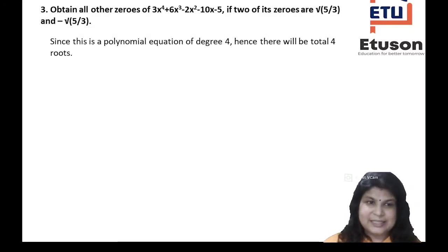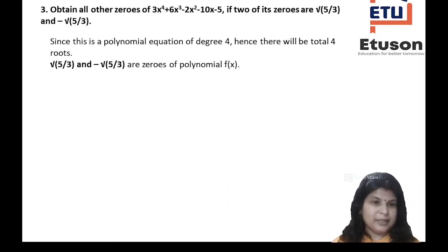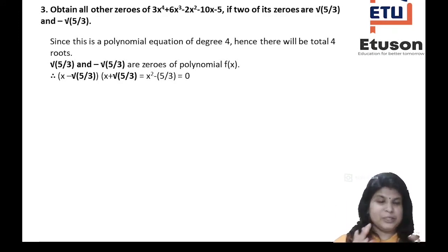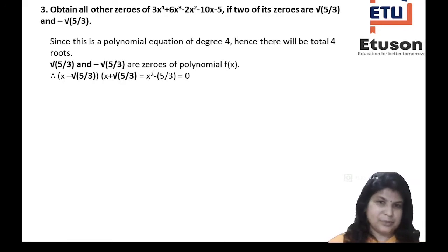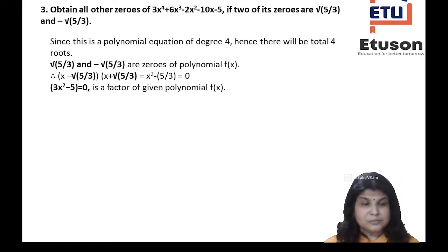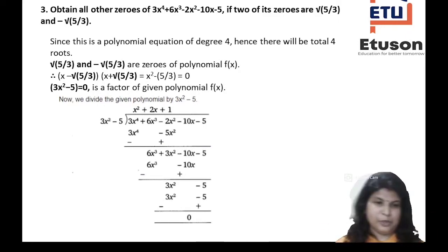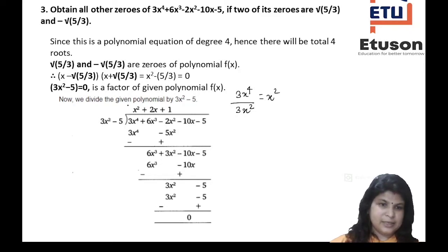Since the polynomial is of degree 4, there will be 4 roots total. The product (x - √(5/3))(x + √(5/3)) = x² - 5/3, so 3x² - 5 = 0 is also a factor of the bigger polynomial 3x⁴ + 6x³ - 2x² - 10x - 5. So we divide 3x⁴ + 6x³ - 2x² - 10x - 5 by 3x² - 5. Dividing 3x⁴ by 3x², we get x², written in the quotient. Multiplying x² with 3x² - 5 gives 3x⁴ - 5x². Subtract to get the new dividend.